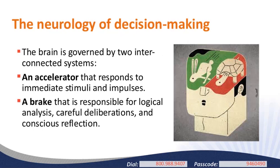Before discussing these responses in more detail, I want to take a brief dive into the neurology of decision-making—just to give you a high-level sense of how our brains process decisions. Think of the brain as being covered by two interconnected systems. One part is the accelerator: the part that responds to immediate stimuli and impulses. Ten thousand years ago when a saber-toothed tiger appeared on the horizon, this is the part that said 'run, find shelter.' Another part is the brake: responsible for logical analysis, careful deliberation, and conscious reflection—the part we want to engage when considering different medical procedures for a loved one.